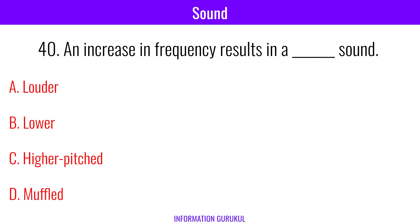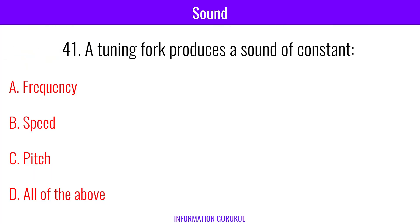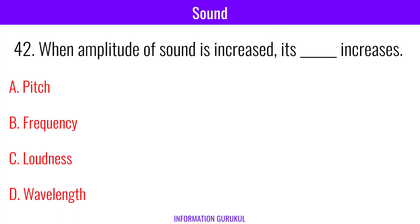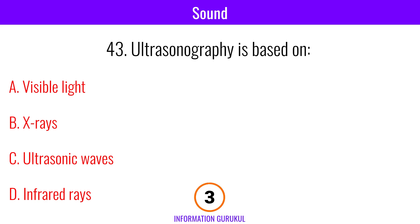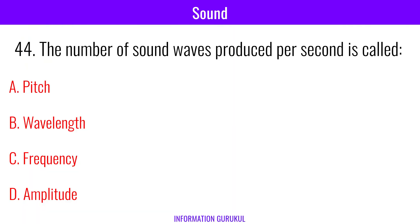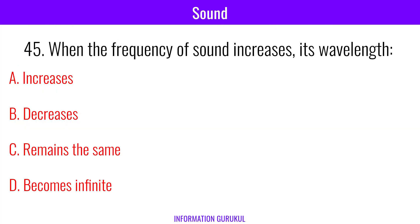An increase in frequency results in a higher pitched sound. A tuning fork produces a sound of constant frequency. When the amplitude of sound is increased, its loudness increases. Ultrasonography is based on ultrasonic waves. The number of sound waves produced per second is called frequency. When the frequency of sound increases, its wavelength decreases.